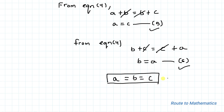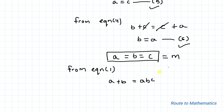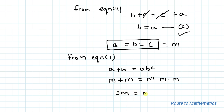Let's set all three values equal to a constant m. Since all three variables equal m, let's substitute m into equation 1: a plus b equals abc becomes m plus m equals m times m times m. So we have 2m equals m cubed.